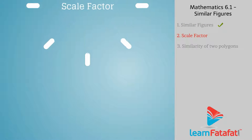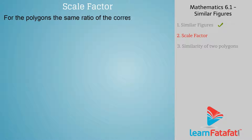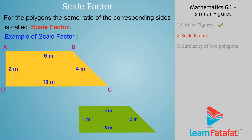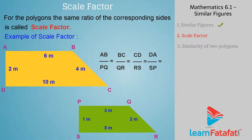Scale factor for polygons. The same ratio of the corresponding sides is called the scale factor. For example, in quadrilaterals ABCD and PQRS, the ratio AB divided by PQ, BC divided by QR, CD divided by RS, and DA divided by SP is the same — that is, 1 divided by 2.